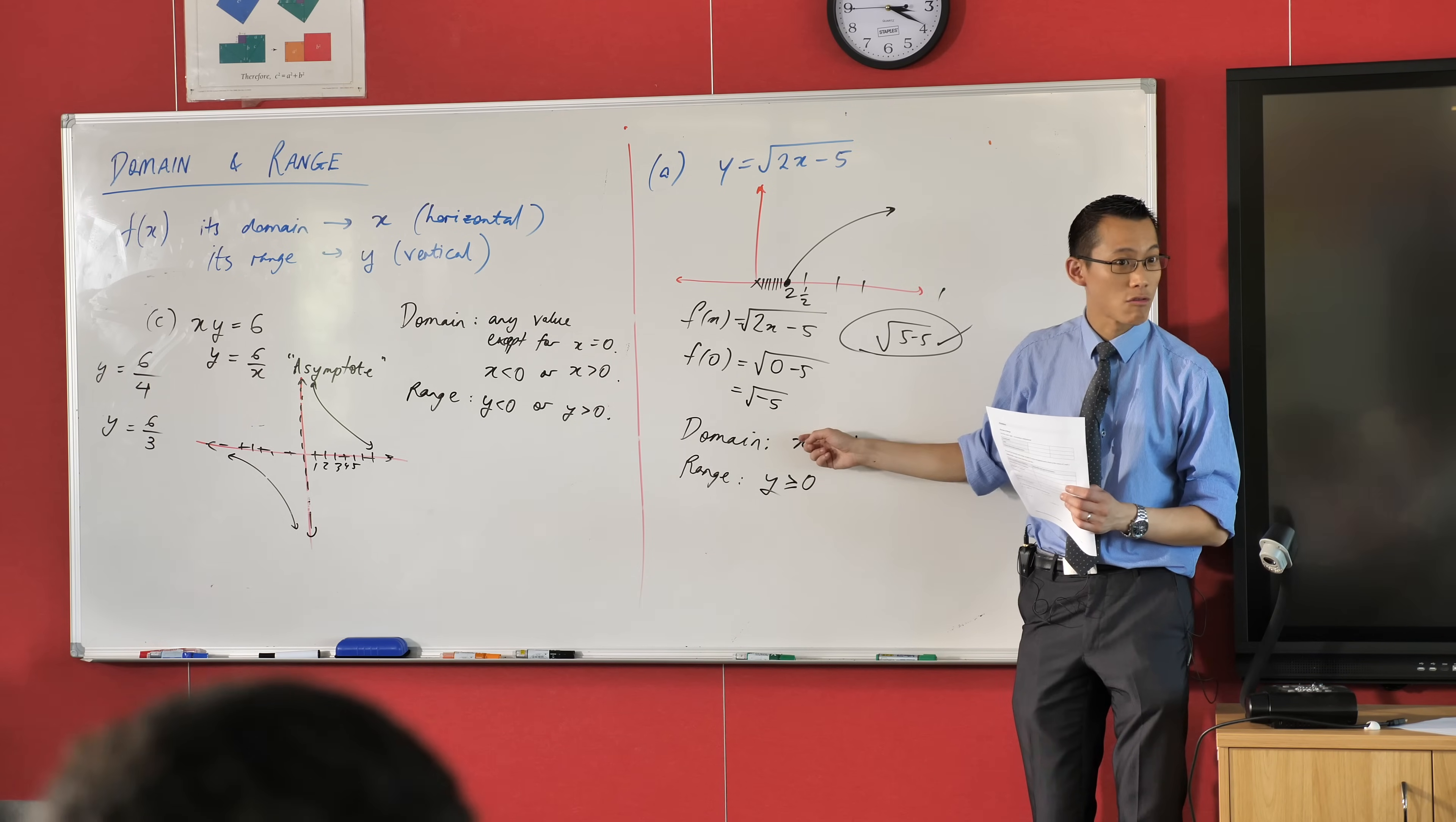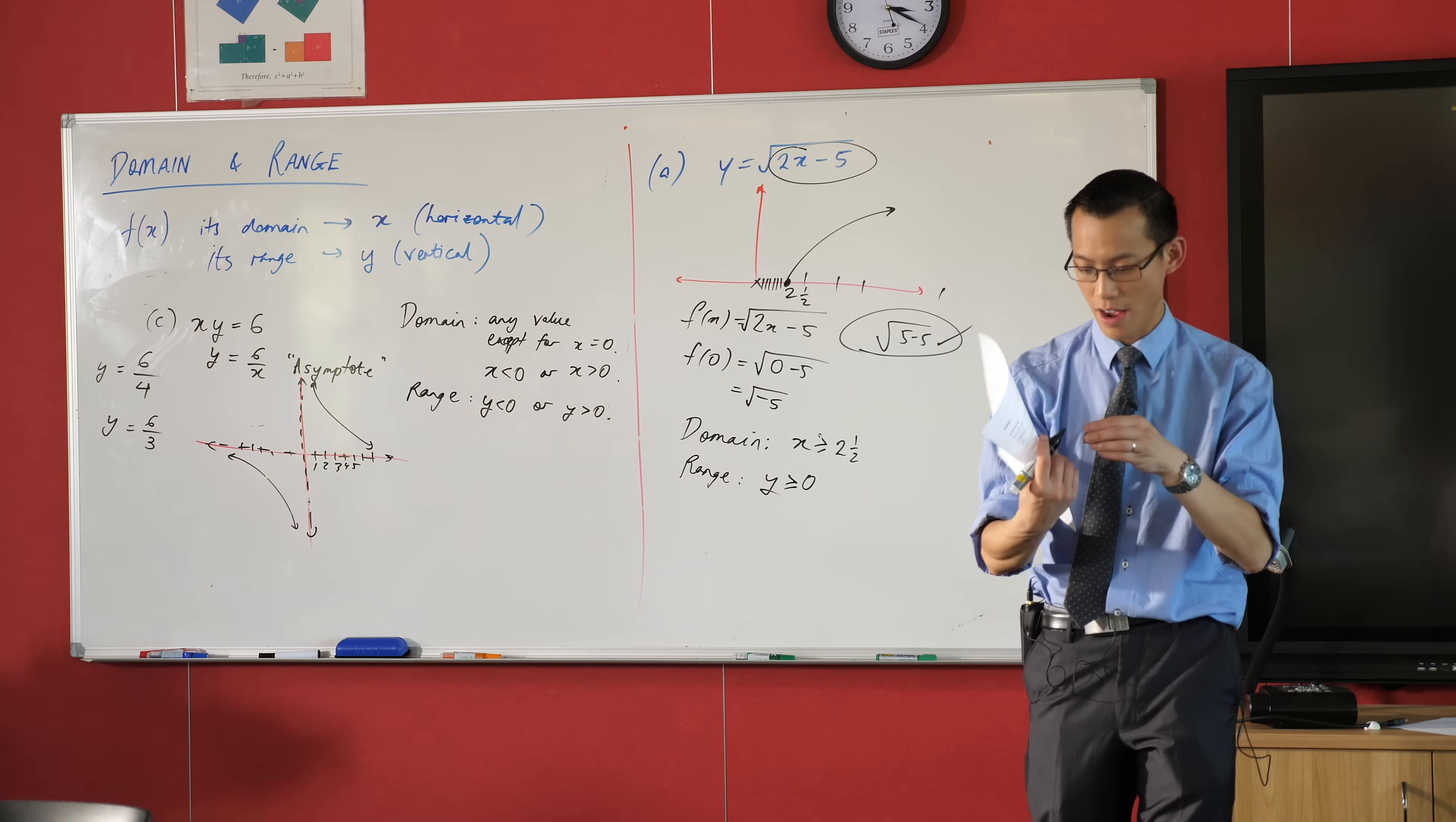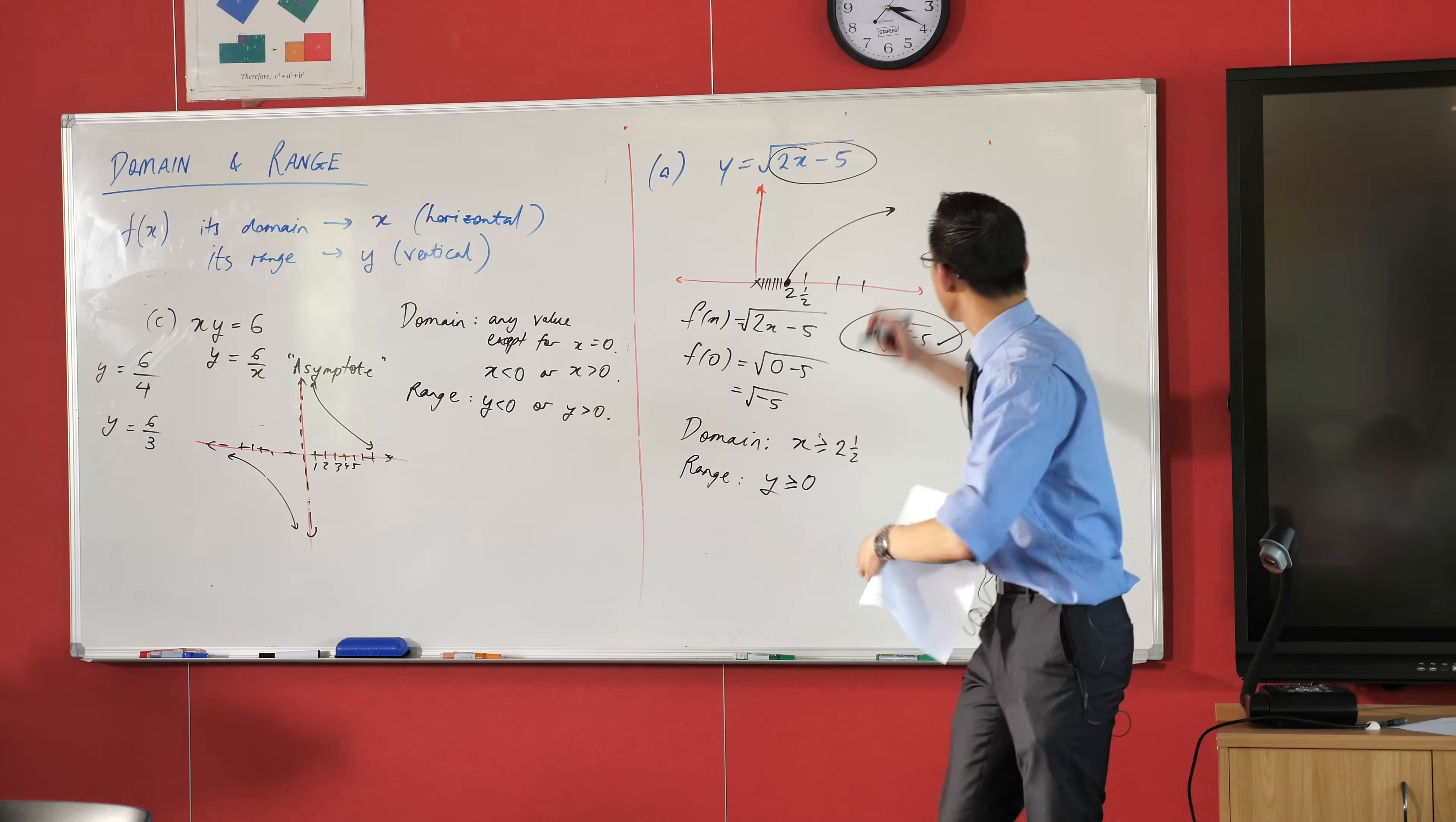When you see a square root like this guy, we're not allowed to take the square roots of negative numbers. So I would say whatever is underneath the square root can't be negative. In fact, that's why I've given you such a big space in the box there. That's what I would write: whatever is underneath the square root is not allowed to be negative. So that's square roots. Quadratics - we start off with this guy.